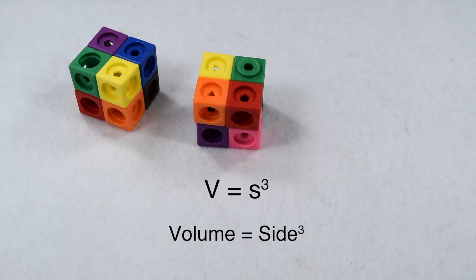So when we find the volume of any cube, we can think of it as solving side length to the third power or simply finding side cubed.